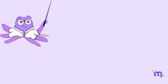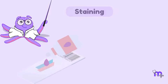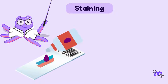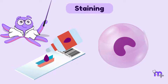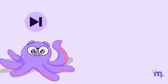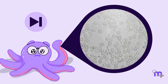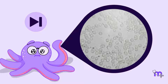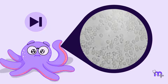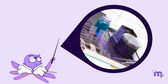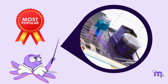The next step involved is staining. It is a crucial step to differentiate cell components. If you skip this step, all cell components will look transparent and colourless under the microscope, making it harder to tell them apart. Haematoxylin and eosin are the popular stains used in our labs.